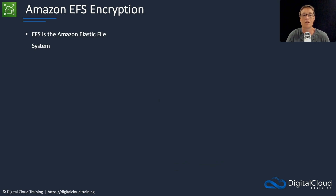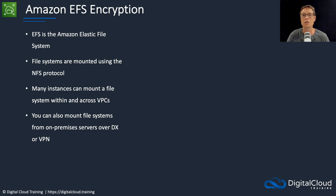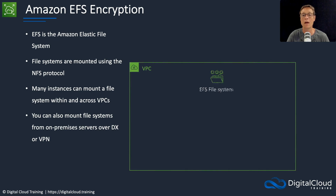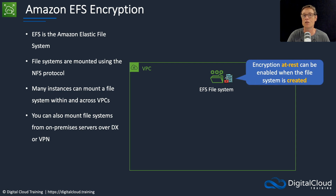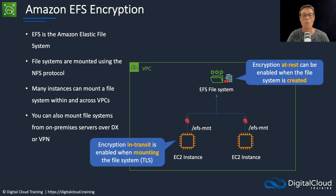Moving on to EFS encryption — the Elastic File System. EFS file systems are mounted using the NFS protocol, and you can mount many instances to a file system across VPCs and availability zones. You can also mount file systems from on-premises servers over a Direct Connect connection or VPN. Encryption at rest can only be enabled when the file system is created — you cannot enable it later. EC2 instances, which must be Linux-based, mount the file system, and you can specify encryption in transit using TLS encryption over the network.